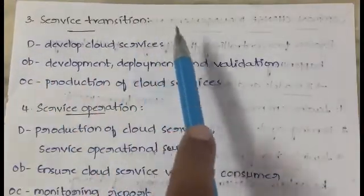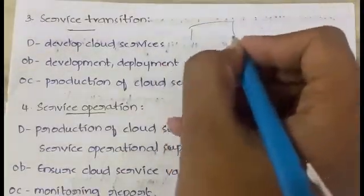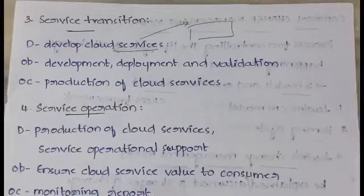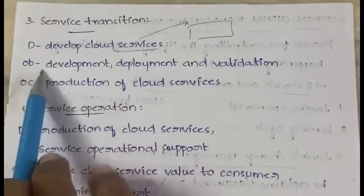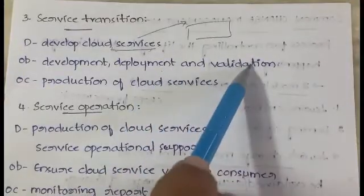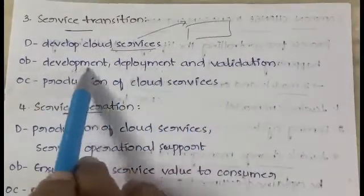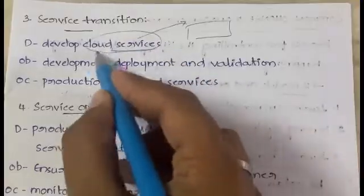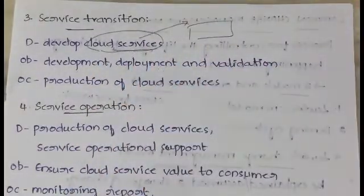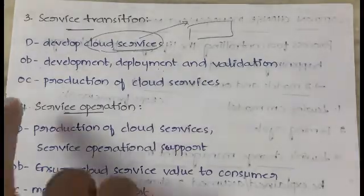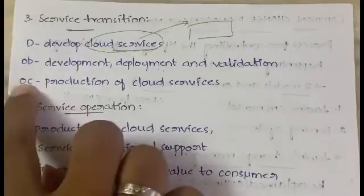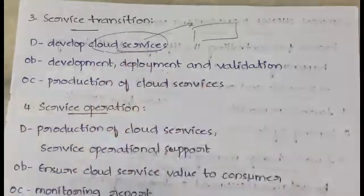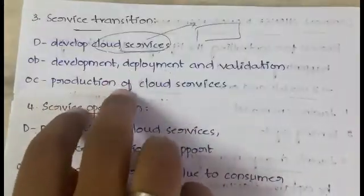The third phase is service transition. The description of service transition is to develop cloud services for transition into production. The objective is development, deployment, and validation — to ensure that the cloud service has all the correct capabilities and capacities. The outcome is the production of cloud services that are ready.